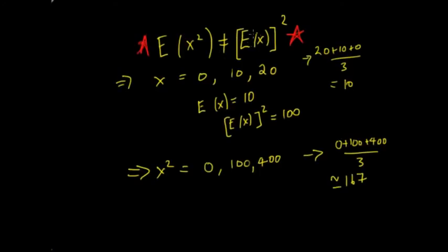The final formula: the expected value of x squared inside the brackets does not equal the expected value squared. Here's an example. If you have x = 0, 10, and 20, each equally likely, the expected value is (20 + 10 + 0)/3 = 10. If you square the expected value, you get 100.